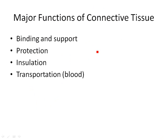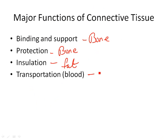Connective tissue also protects us. Bone protects your brain — your brain is inside your skull. You also have fat, which is the cushioning on your body, so that's a protective function. Fat will insulate you. Bone will protect and support you. Transportation is another function — carrying oxygen, carbon dioxide, and nutrients throughout the body. So connective tissue does a whole lot for us.